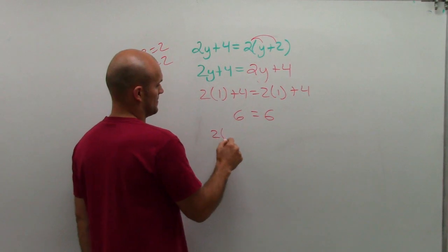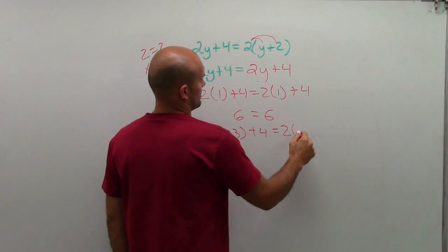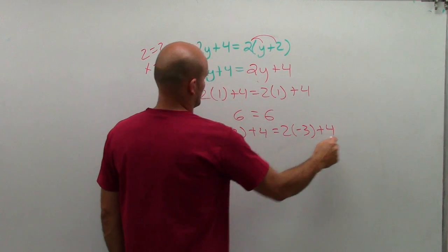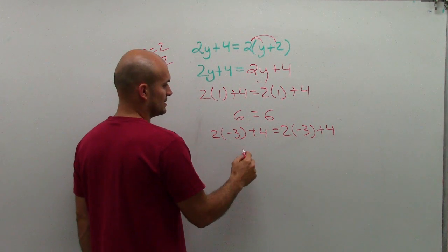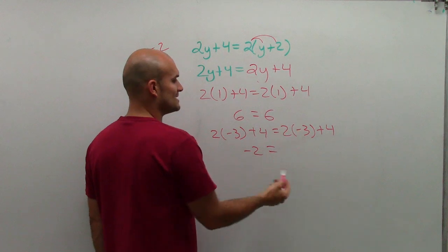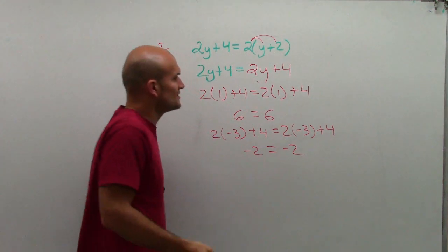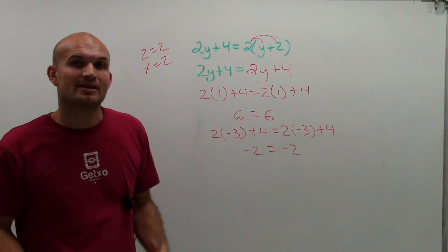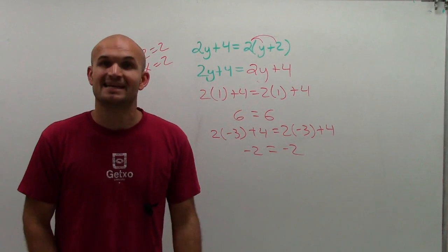Let's try negative 3. 2 times negative 3 is negative 6. Negative 6 plus 4 is negative 2. 2 times negative 3 is negative 6. Negative 6 plus 4 is negative 2. So it doesn't matter which number I plug in. You're always going to have a solution. So you have infinitely many solutions.